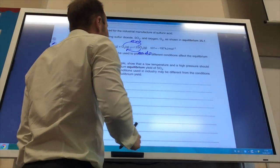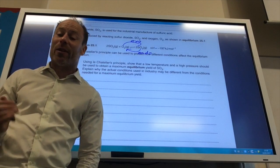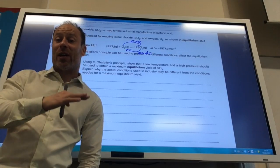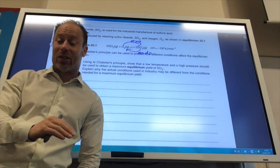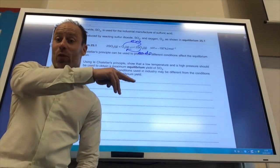So when I decrease the temperature, the equilibrium moves in the exothermic direction to increase the temperature. So that's why I'd use a low temperature for this reaction to encourage the reaction to move in the exothermic direction, the forward reaction.